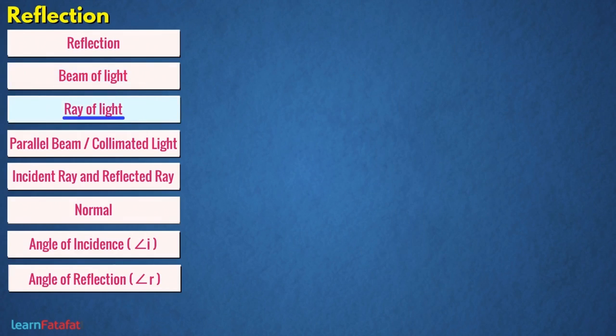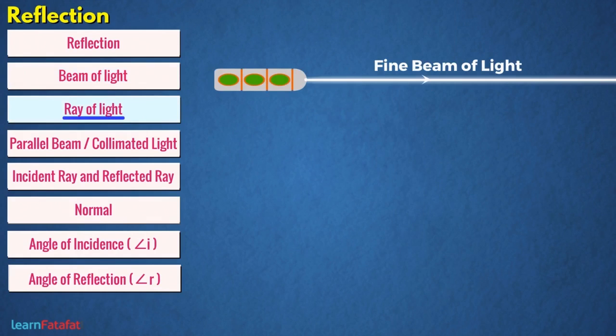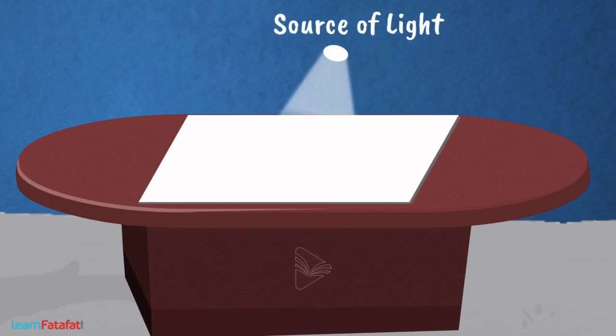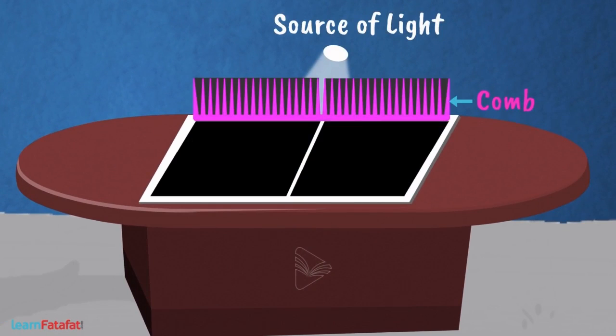Ray of light: a fine beam of light is treated as a ray of light. On a drawing board, if you fix a white sheet and allow light to pass through the opening of the comb, leaving other openings closed, then